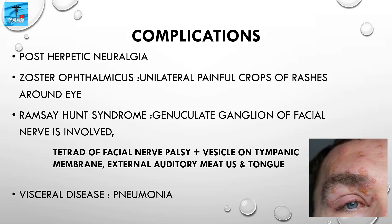Complications of zoster: First is post-herpetic neuralgia — pain at the local site lasting for months, and it is the most common complication in elderly patients. Zoster ophthalmicus presents as unilateral painful clusters of skin rashes around the eye. Ramsay Hunt syndrome develops when the geniculate ganglion of the facial nerve is involved, characterized by ipsilateral facial nerve palsy, vesicles on the tympanic membrane and external auditory meatus, and tinnitus.